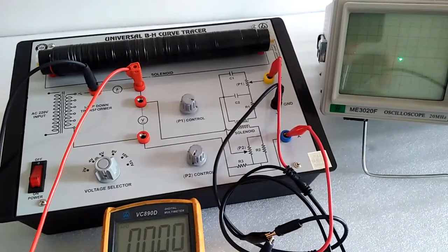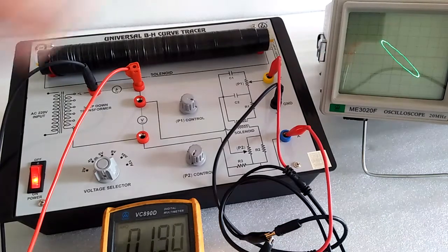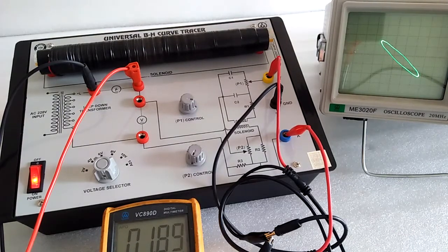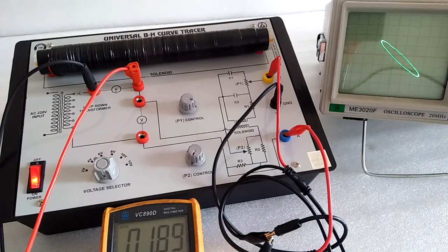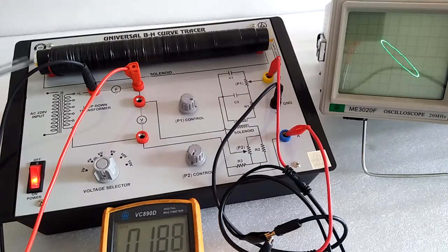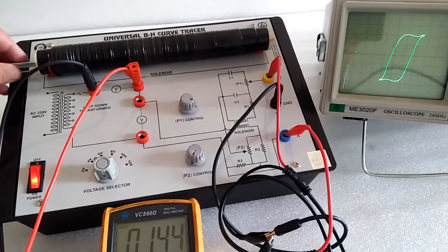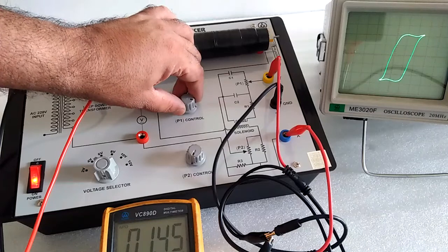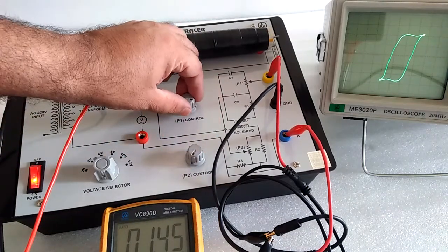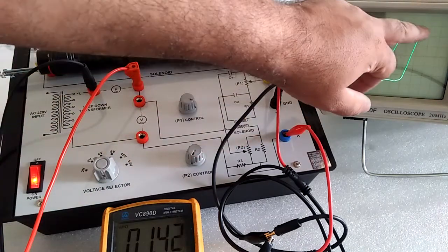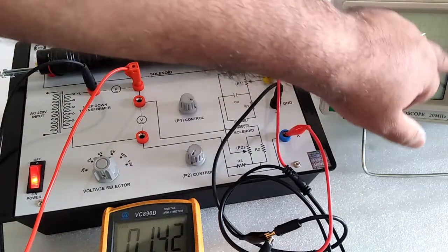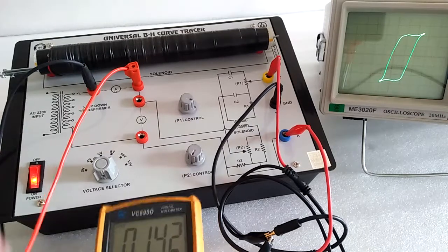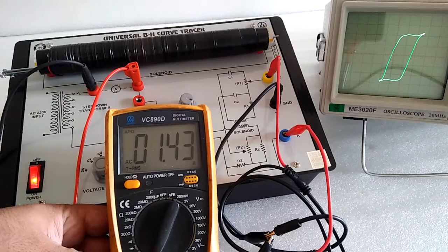Switch on. We can observe the signal over here. Now put the sample—there are different samples with spokes inside. Now observe the CRO screen. The BH curve is traced by using the potentiometer. You can make it a clear trace. Trace this curve on graph paper to find the area, or use the DSO to take a printout. Here we have the current value: 1.43 mA.